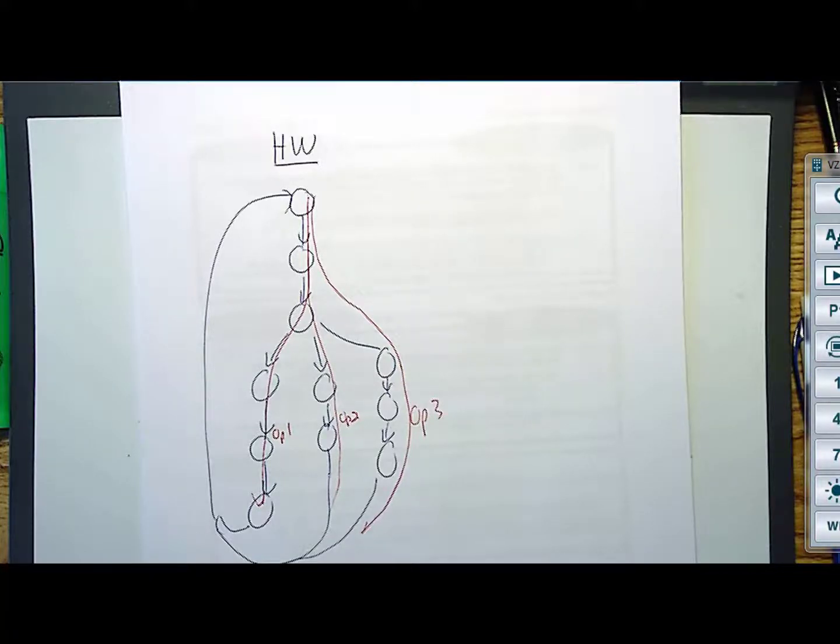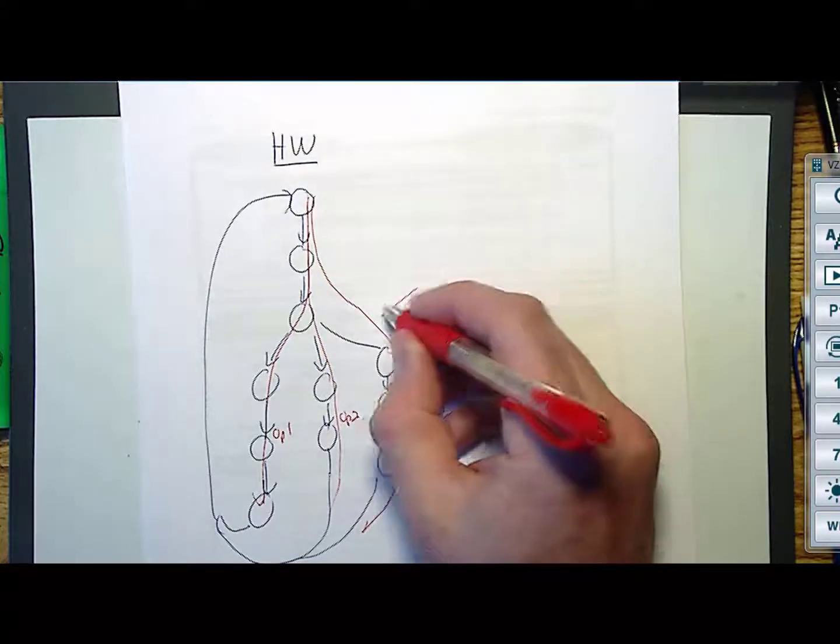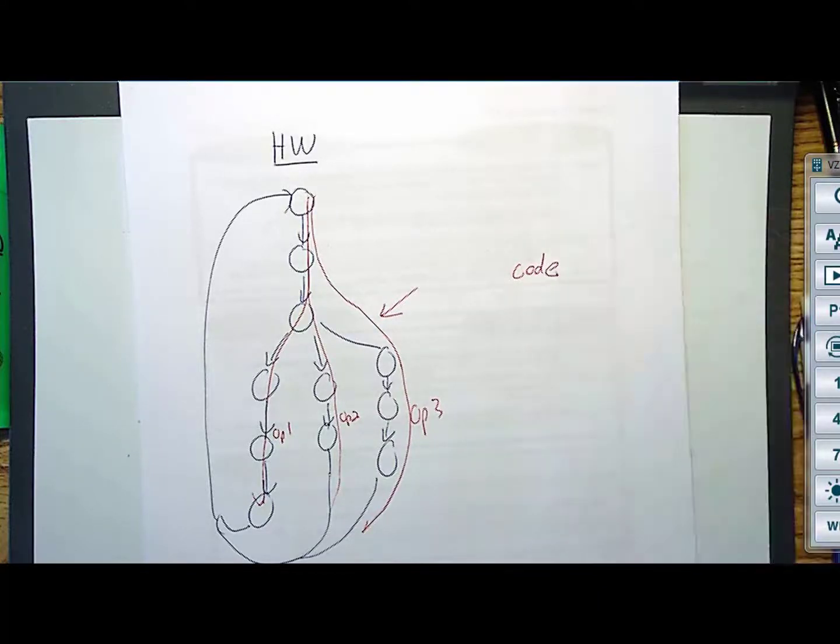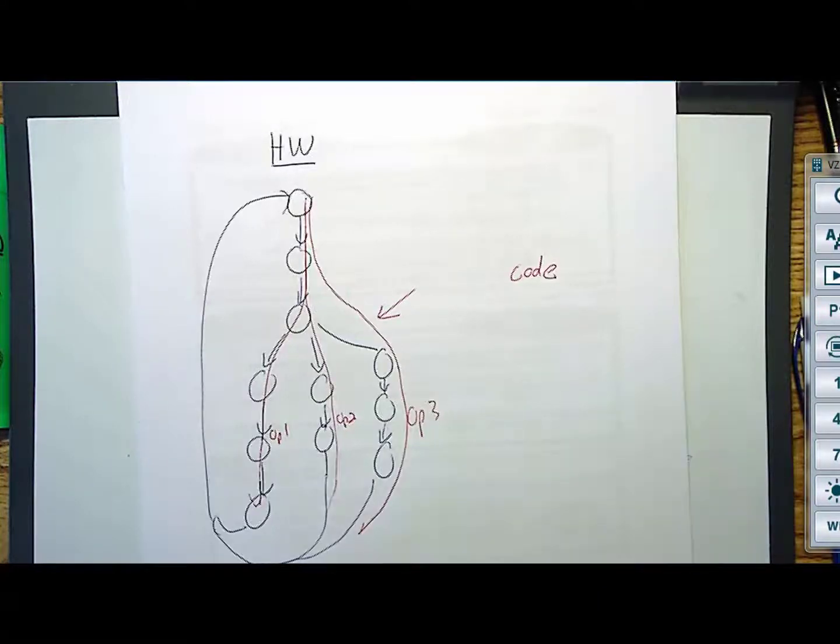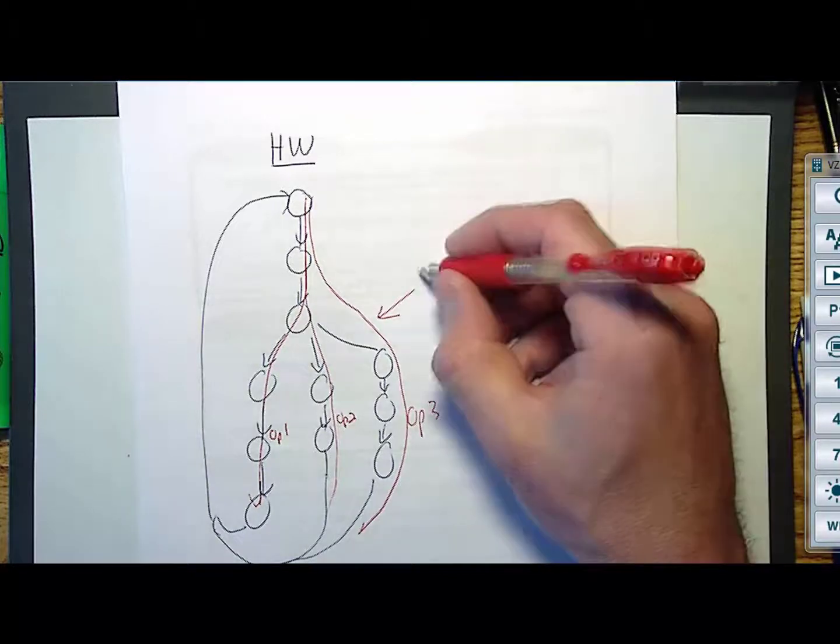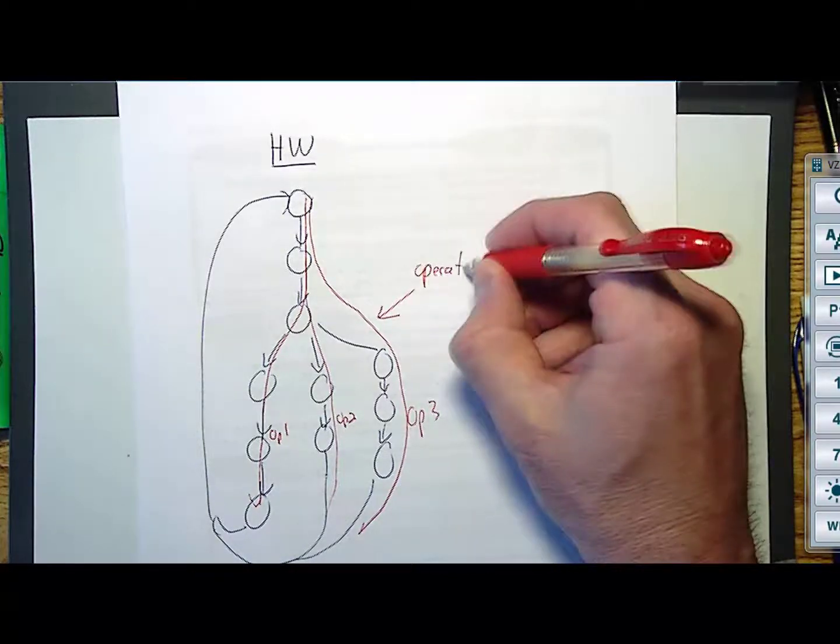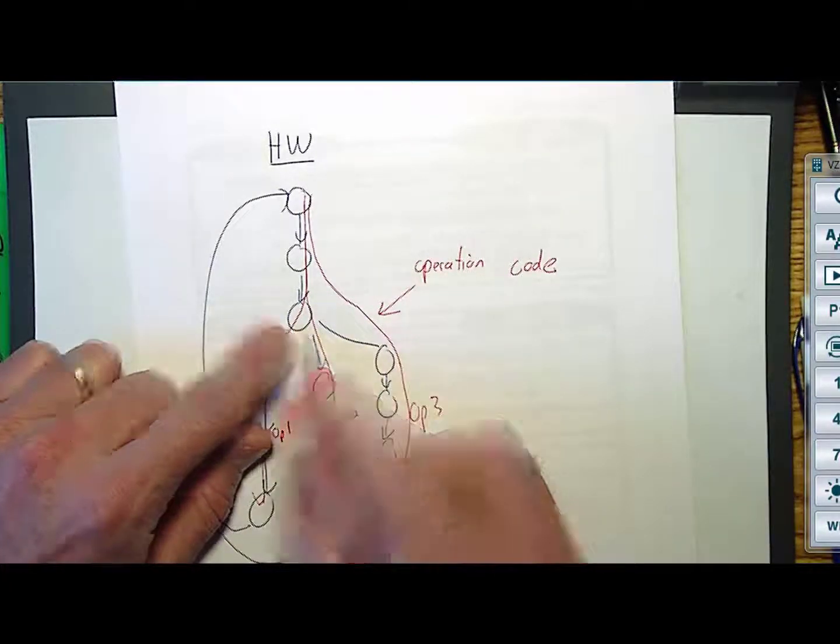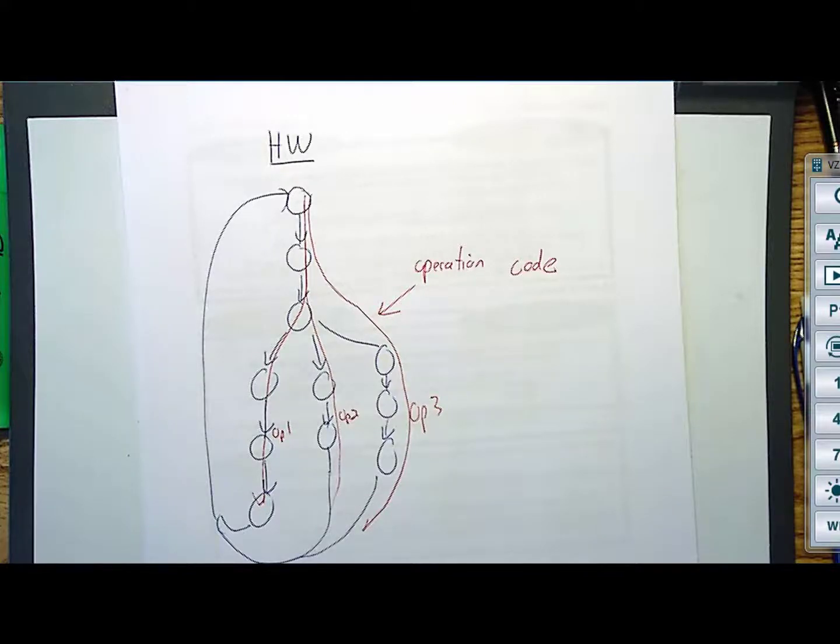You tell the hardware which operation that you want it to do at any given time by giving it a code. Why don't we just call it an operation code? Because you're telling the hardware which operation to do. So let's call it an operation code, and you provide this as ones and zeros, and the state machine looks at it at this point right here, where it takes the operation code and decides which path to take through the hardware in order to do its thing, to do the operation.